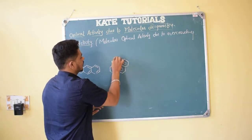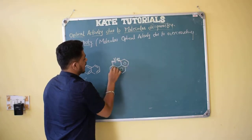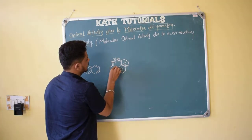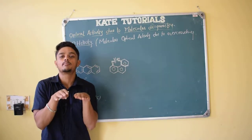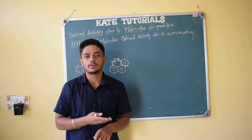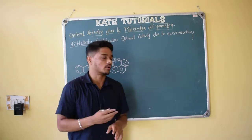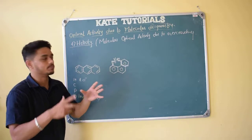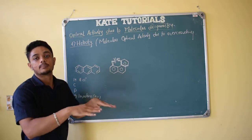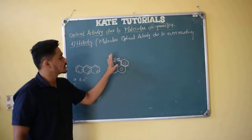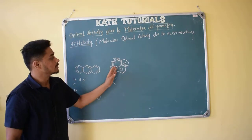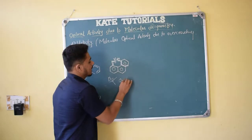Because of repulsion between the methyl groups, one methyl goes above the plane and the other goes below the plane. So this molecule is no more in a single plane. Because of this crowding effect — where population density is more — there is repulsion. To minimize that repulsion one group goes above and one goes below, so they are no longer in a single plane. The plane of symmetry is therefore absent.